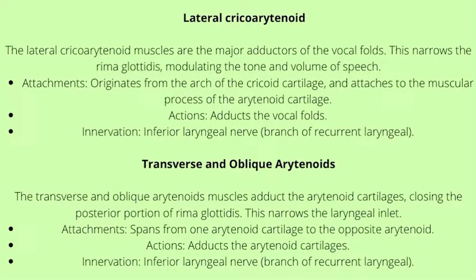The lateral cricoarytenoid muscles are the major adductors of the vocal folds; this narrows the rima glottidis, modulating the tone and volume of speech. They originate from the arch of the cricoid cartilage and attach to the muscular process of the arytenoid cartilage; they adduct the vocal folds and are innervated by the inferior laryngeal nerve, a branch of the recurrent laryngeal nerve. The transverse and oblique arytenoid muscles adduct the arytenoid cartilages, closing the posterior portion of the rima glottidis and narrowing the laryngeal inlet. They span from one arytenoid cartilage to the opposite arytenoid, adduct the arytenoid cartilages, and are innervated by the inferior laryngeal nerve, a branch of the recurrent laryngeal nerve.